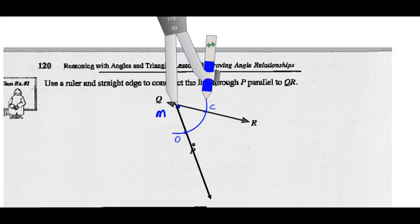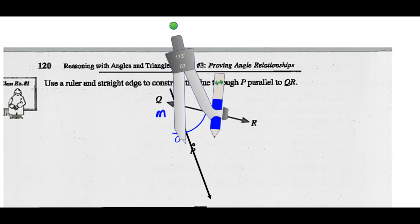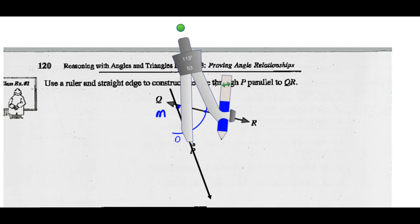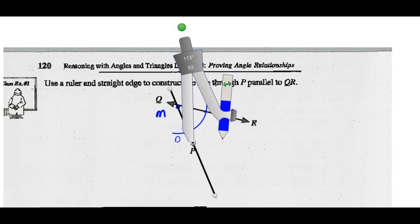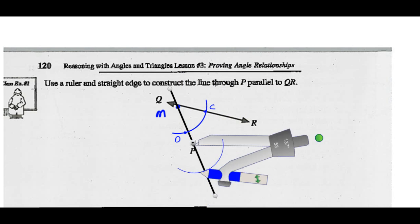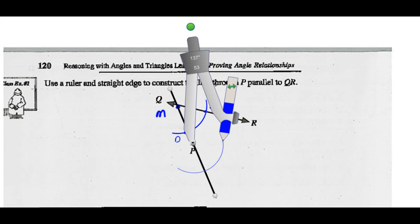Don't change the radius of the compass. Using the same radius as in the previous step, construct a second arc centered at point P on the line. Make sure it intersects that line at a further point. Let's move our compass down to point P on this line — point P is on that line, and we've kept the radius the same. All we have to do now is draw an arc that intersects that line, and we'll label that point E.